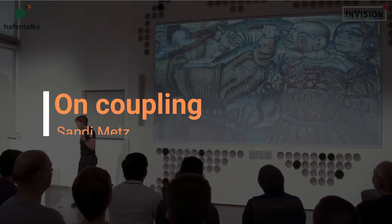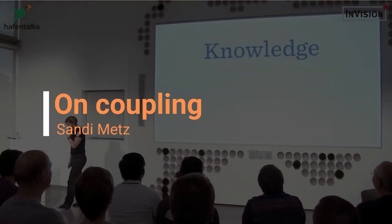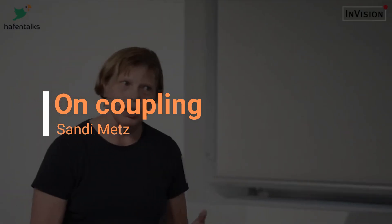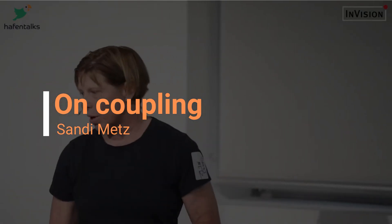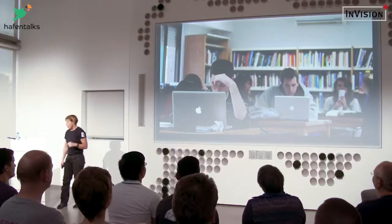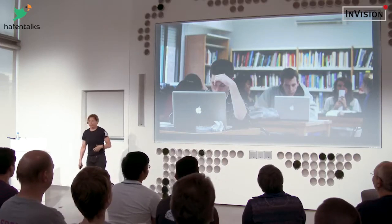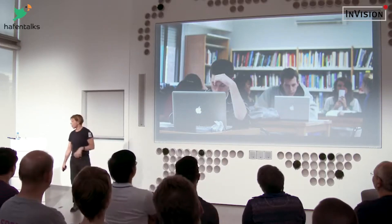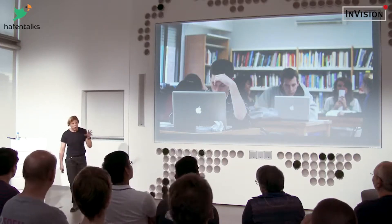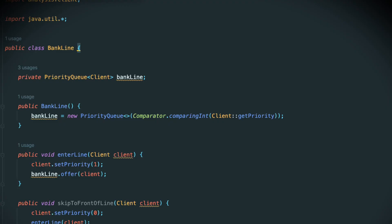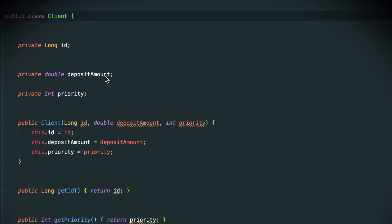Things get coupled together because of knowledge. Your apps are made up of objects, and objects know things about one another. They always know things about themselves. Sometimes they know stuff about other objects, and it's knowledge of other objects that binds things together. So when an object knows something outside of itself, from some other object, that's a dependency.